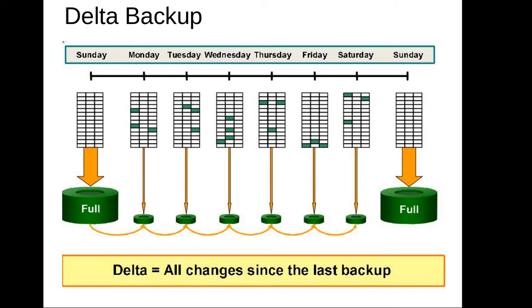There is a common wrong assumption that incremental or delta backups will be faster compared to a full backup. This is totally not true — incremental and delta backup might consume more time because DB2 has to track all the changes inside the database. The only advantage is the size of the image will be smaller compared to your full backup. This is a common interview question, and 99% of the time people say it will consume less time compared to a full backup, which is not true.